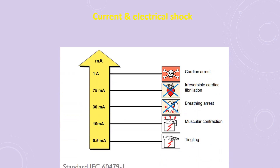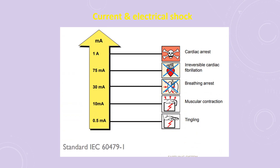Now let's see how much current flows and what will happen inside the body. At 0.5 milliampere, you will feel the sensation of current. At 10 milliampere, your muscles will contract. At 30 milliampere, breathing arrest occurs. And at 1 ampere, you will get cardiac arrest — your heart will fail. This is what happens when current flows inside the body.